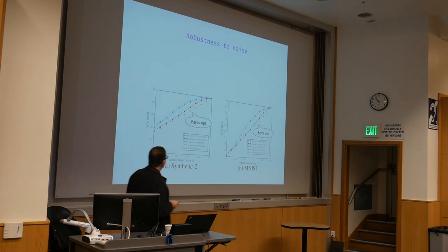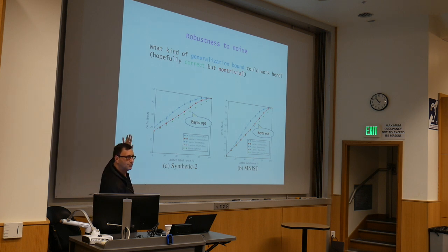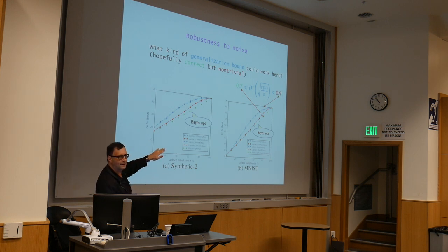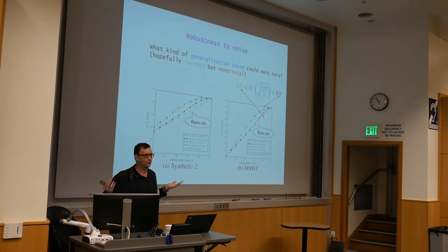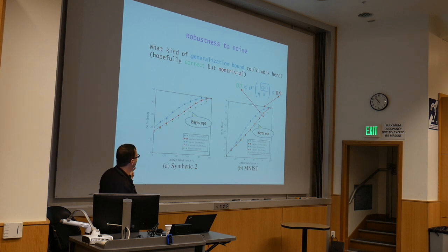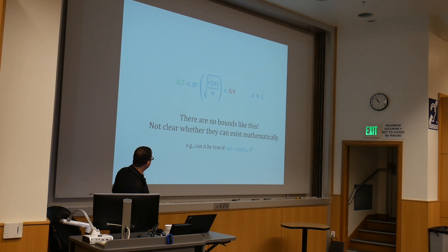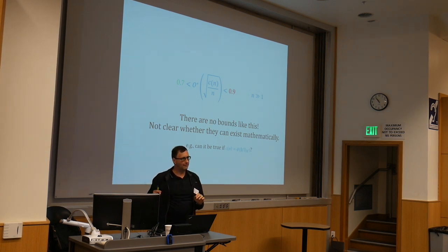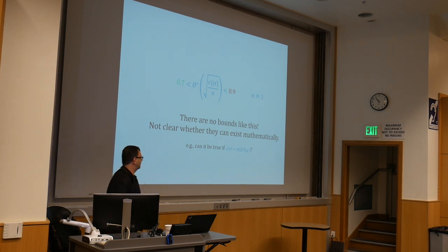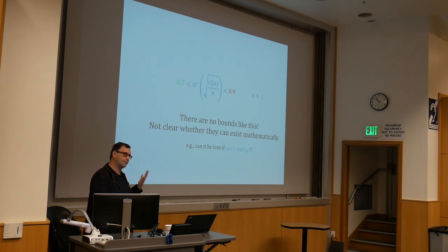What does it mean? That means that if we have a generalization bound, we would like it to be correct but also non-trivial. This is a 10-class classifier, so if the bound is more than 0.9, that's trivial because it's worse than random. If it's less than 0.7, it's better than Bayes optimal — that's impossible. So to be correct and non-trivial, this quantity has to be between 0.7 and 0.9. Here is the issue: there are actually no bounds like this. Not to say they don't exist — I couldn't quite prove they don't exist — but they're certainly not known, and I personally suspect they don't exist.